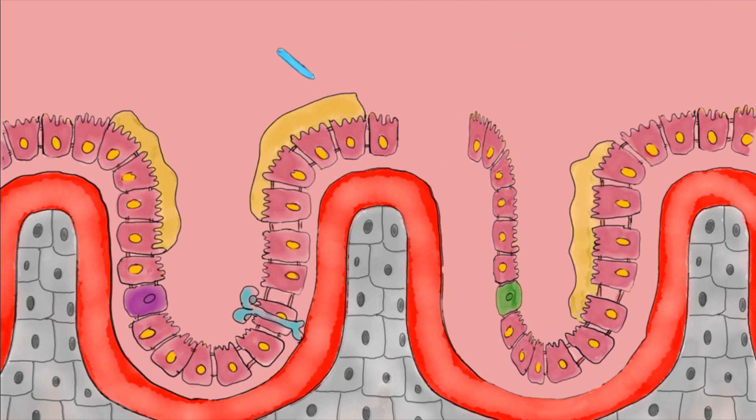In a leaky gut, bacteria and their products, such as lipopolysaccharides, end up on the wrong side of the protective barrier and enter systemic circulation.